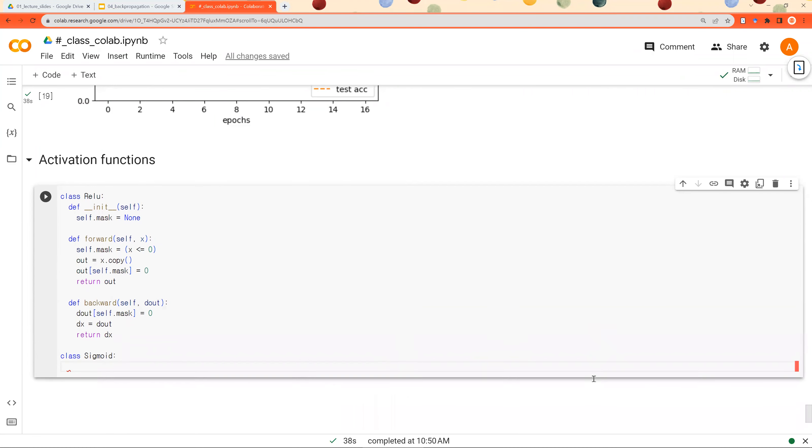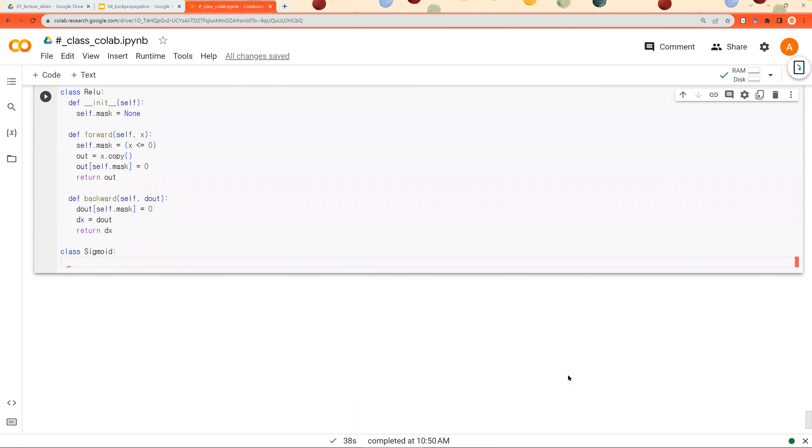Another activation function we are going to define is sigmoid. We need to do the same thing. Initialize, self, forward operation, backward operation. And this is going to be our exercise. Take some time and implement this class on your own. And see you in the next video.